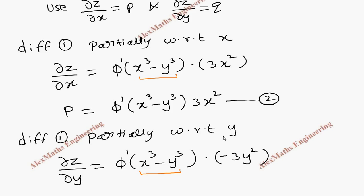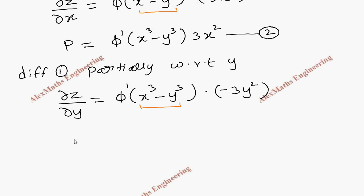The y term we have to differentiate which is -3y². And this is named as q, and this is phi dash of (x³ - y³) into -3y². This is taken as the third expression. Now the second expression is divided by the third expression.